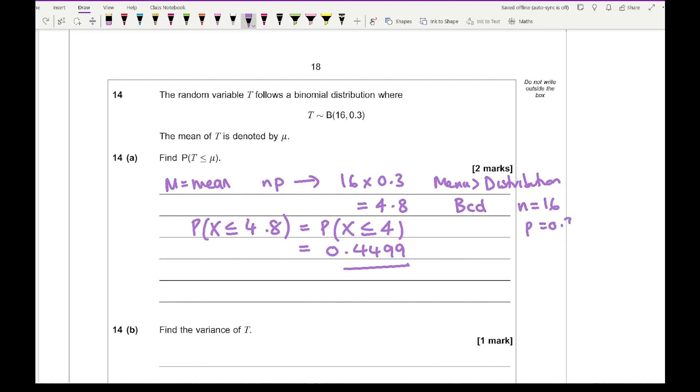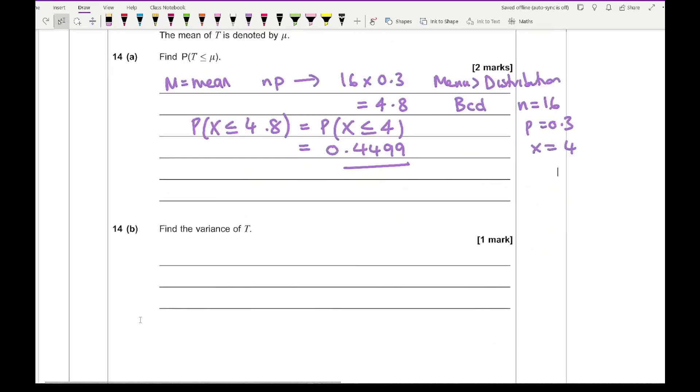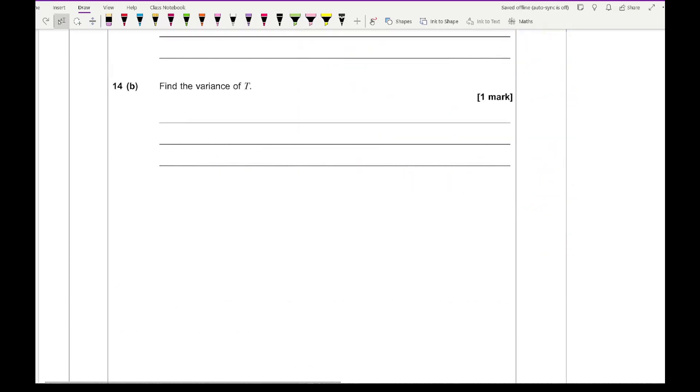To enter this on the calculator, go to menu, then distribution, then BCD. We're entering the values of N equals 16, P equals 0.3, and X equals 4. Then for 14B, it says find the variance of T. The formula for this is NPQ where Q equals 1 minus P. Substituting those numbers, we get 16 times 0.3 times 0.7, which gives me an answer of 3.36.